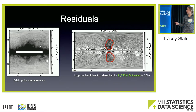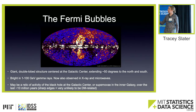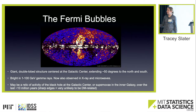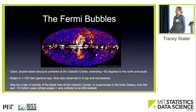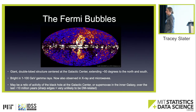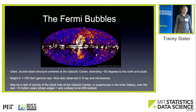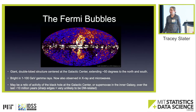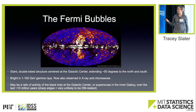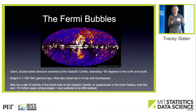The Fermi bubbles are giant double-lobed structures centered at the galactic center, extending 50 degrees north and south — about 30,000 light-years height each — shining brightly in gamma rays between 1 and 100 GeV. Since we found them in gamma rays, people have observed counterparts in X-ray and microwaves. They may be a relic of black hole activity at the galactic center over the last 10 million years, a kind of galactic archaeology. But they clearly have nothing to do with dark matter — the signal is not spherical, has very sharp edges, indicating interaction with baryonic matter.